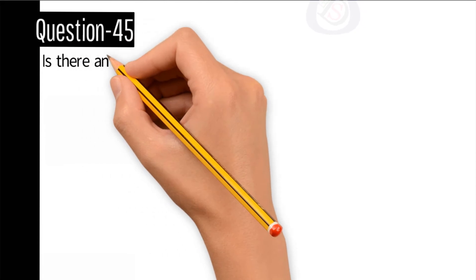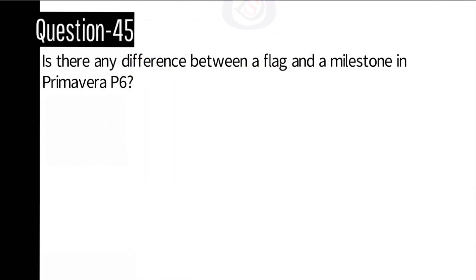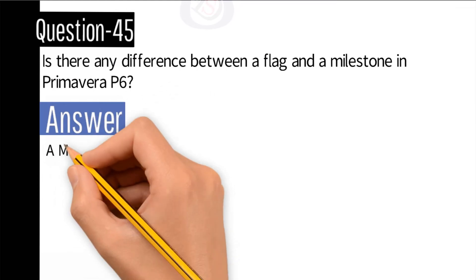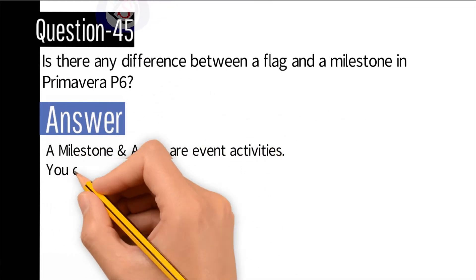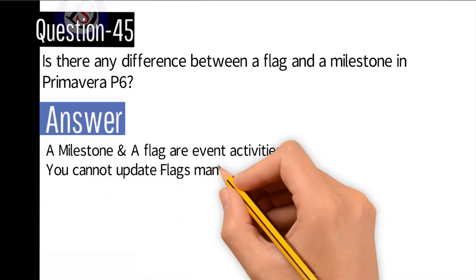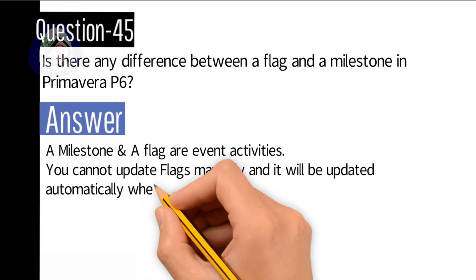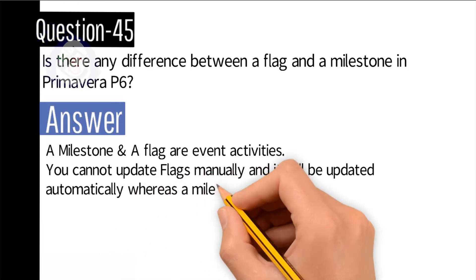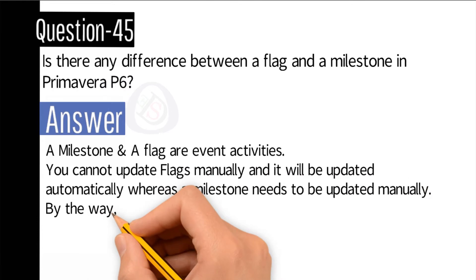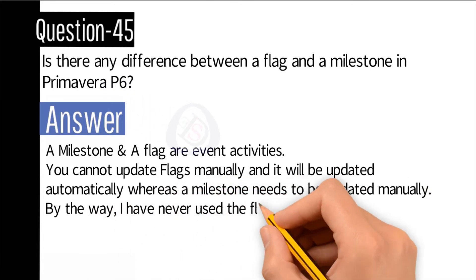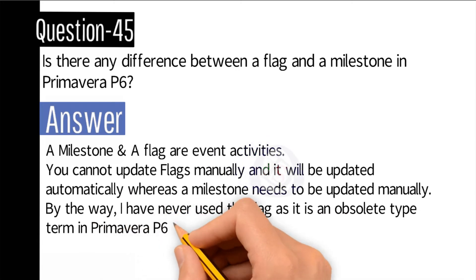Question number 45: Is there any difference between a flag and a milestone in Primavera P6? A milestone and a flag are both event activities. You cannot update a flag manually — it is updated automatically — whereas a milestone needs to be updated manually. By the way, a flag is considered an obsolete term in Primavera P6 nowadays.